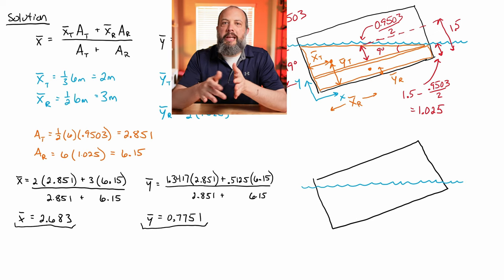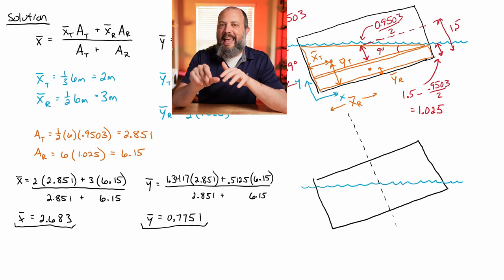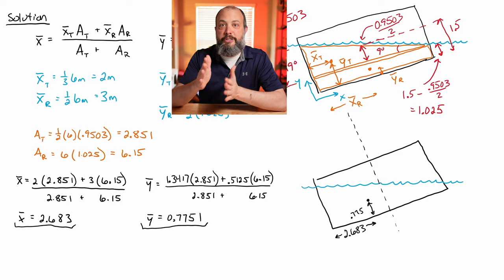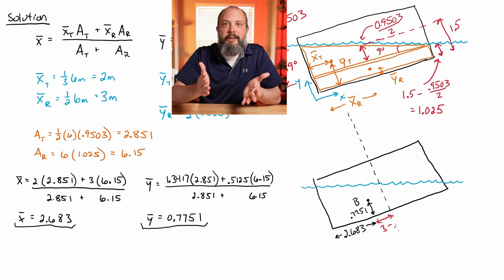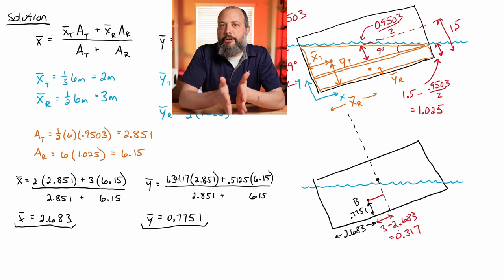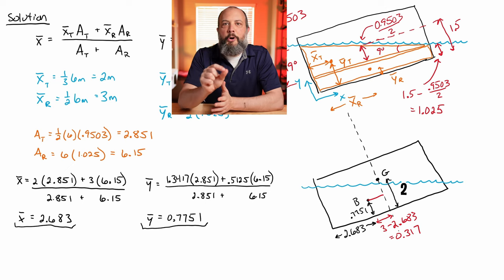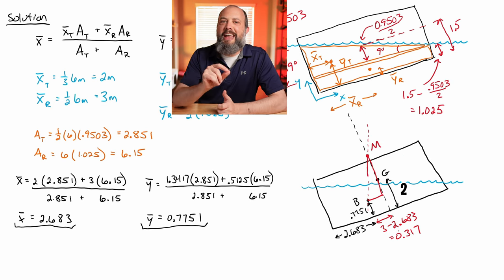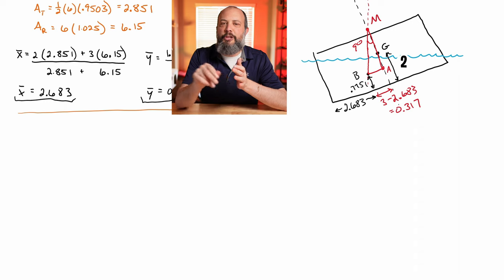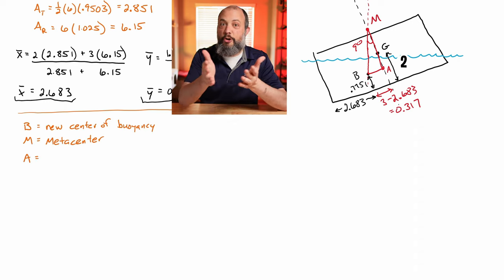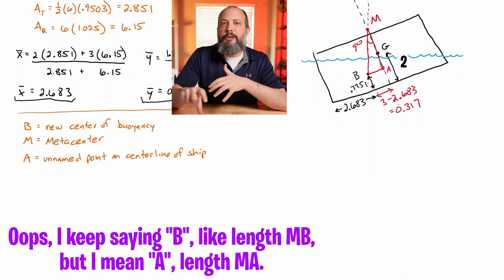Next, we draw a triangle where the base is the 0.3 in the x direction. The vertical side of the triangle follows the center line of the ship straight upwards — though now because the ship is at an angle, this line is at an angle. The straight vertical line in the direction of the buoyancy force forms the hypotenuse of this triangle. The top part of this triangle, where the buoyancy force intersects the center line of the ship, that is M — the metacenter. We use the base of the triangle, 0.3168, along with the 9-degree slope, to find the vertical length of this triangle, MB.